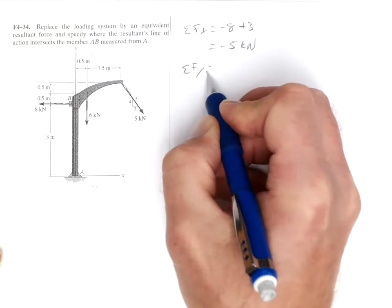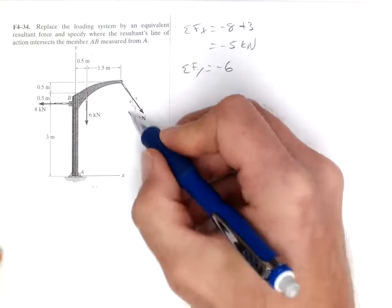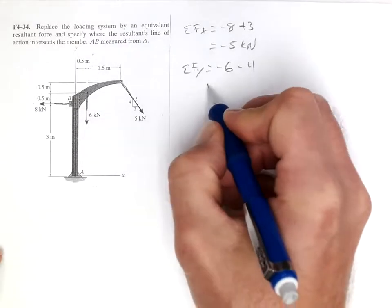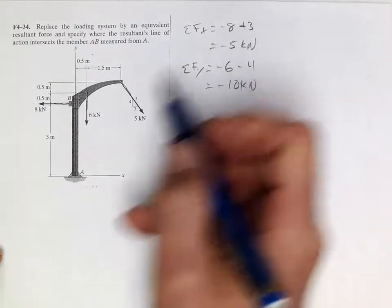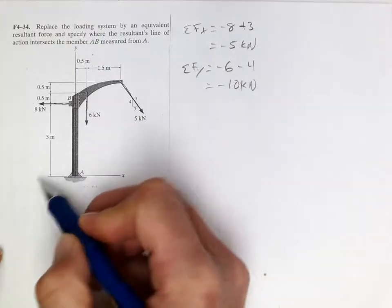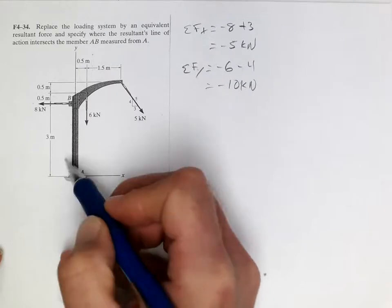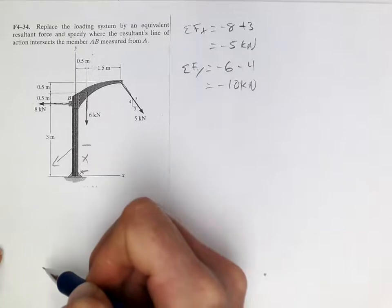Sum the forces in the y direction, and we got negative 6 minus 4 equals negative 10 kilonewtons. So our resultant force is going down and to the left like that somewhere, and we want to find the distance x where that acts.